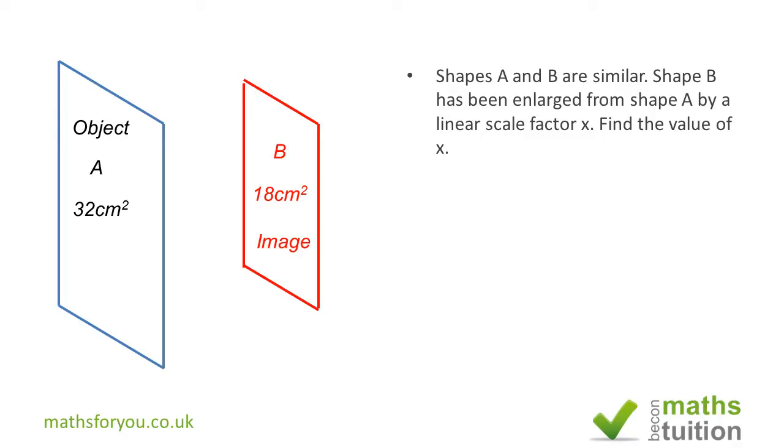As I said earlier, you then have to divide the area of the image by the area of the object. The area of B is 18 centimeters squared and the area of A is 32 centimeters squared. When we cancel that, we end up with 9 over 16.